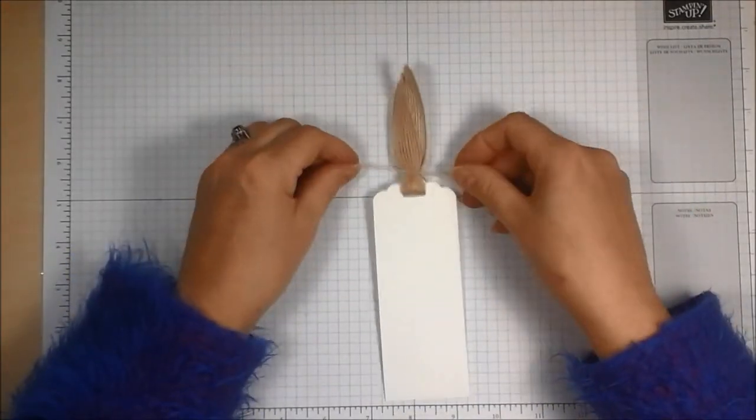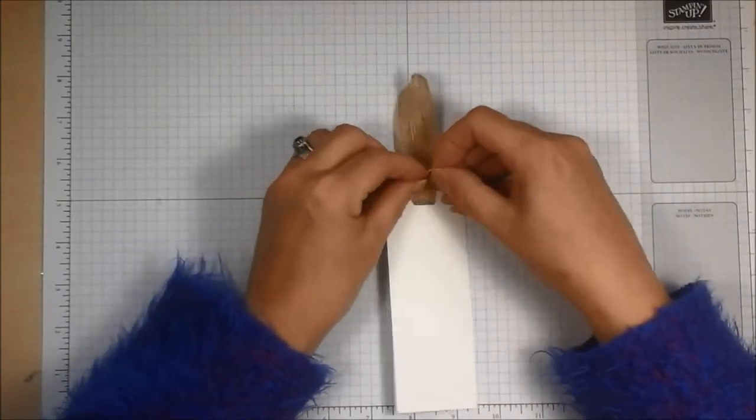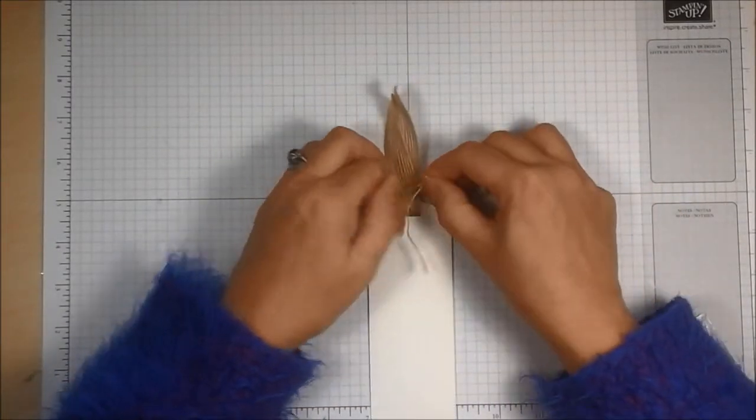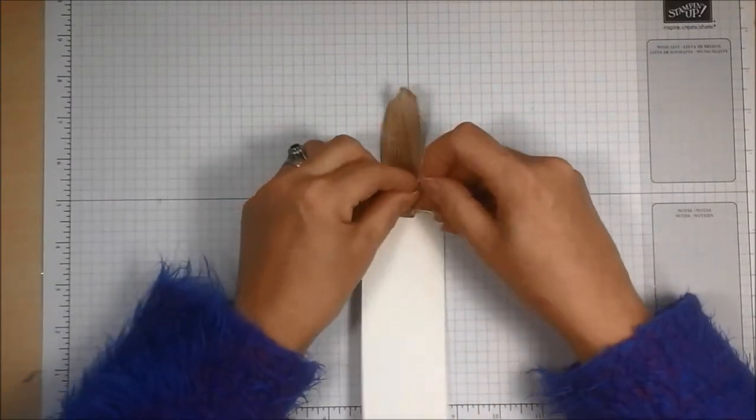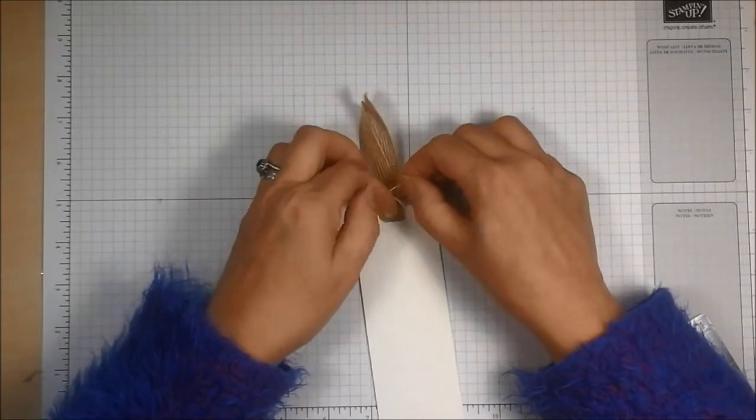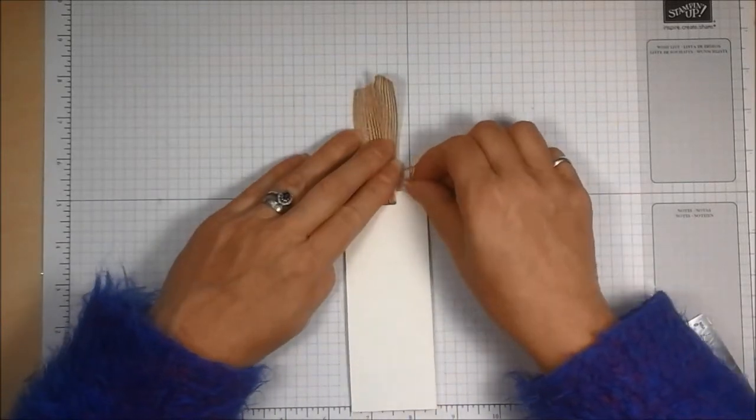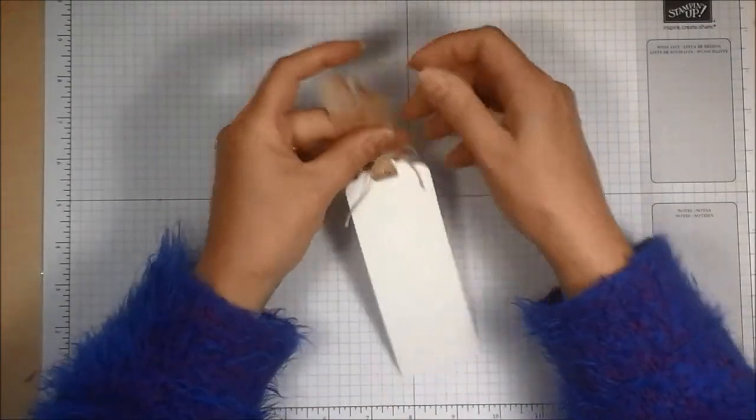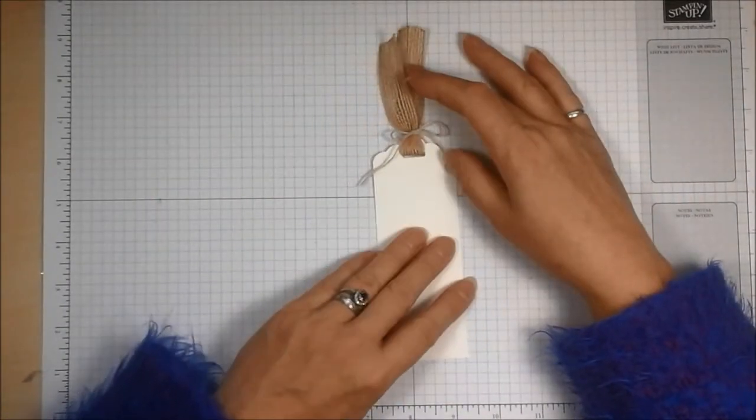Now, depending on what twine you're using, you can leave this, just trim them off and leave them loose, or you can tie it into a little bow. There we go. You can tie it into a little bow, adjust your ends, and that's another pretty way of doing it, especially if you're using contrasting colors.